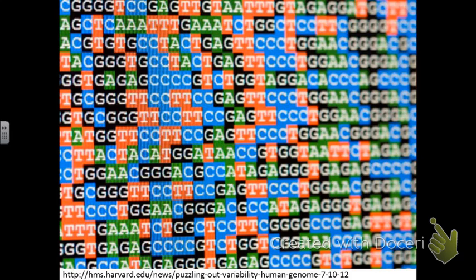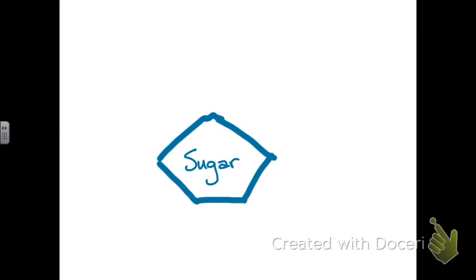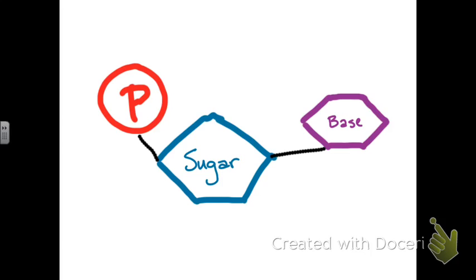Here you're just looking at a tiny fragment of what would be a huge volume of letters, those A's, T's, C's, and G's. And those letters represent nucleotides. A nucleotide is actually three simple pieces: a sugar, a phosphate group, and a base.